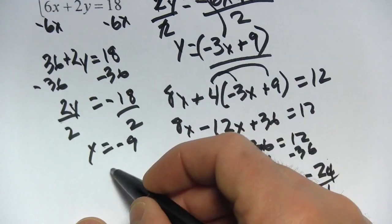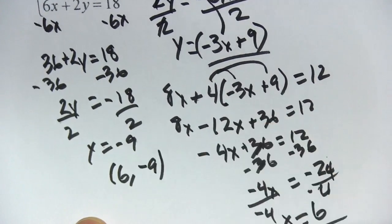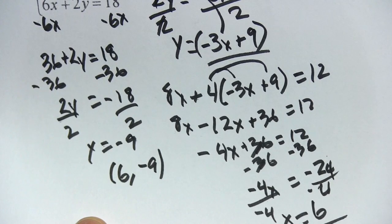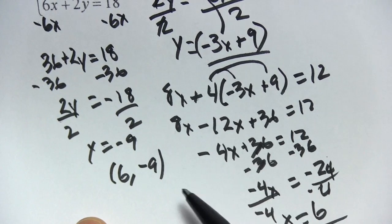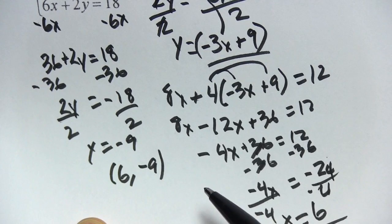So for our answer, x equals 6 and y equals negative 9. So that's a little bit of work in solving systems of equations using the substitution method.